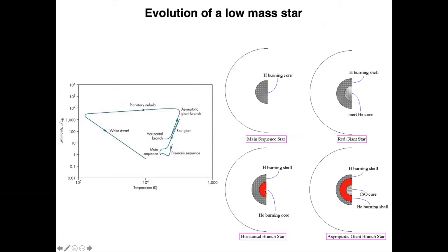Again, as the carbon ash builds up, you have now a degenerate carbon core with a layer of a helium burning shell and hydrogen burning shell. Convection again sets in and the star climbs the giant branch. Now it's an asymptotic giant branch star.